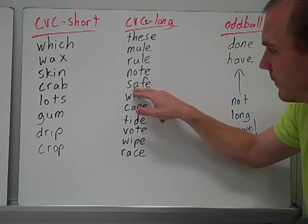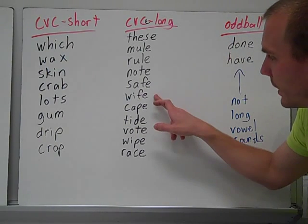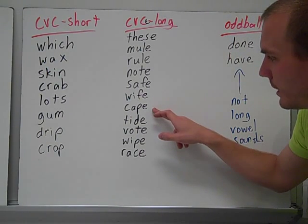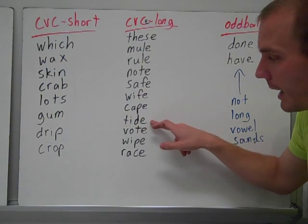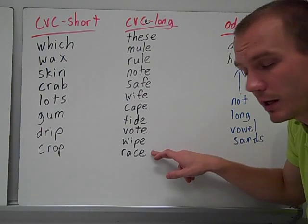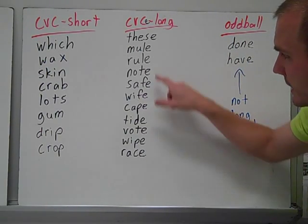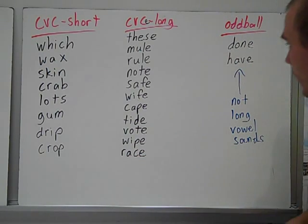Safe, vowel, consonant on either side, and an e at the end. Safe, long a. Wife, long i. Cape, a. Tide, i. Vote, wipe, race. Again, all long vowel sounds because the e at the end caused the vowel in the middle to be long.